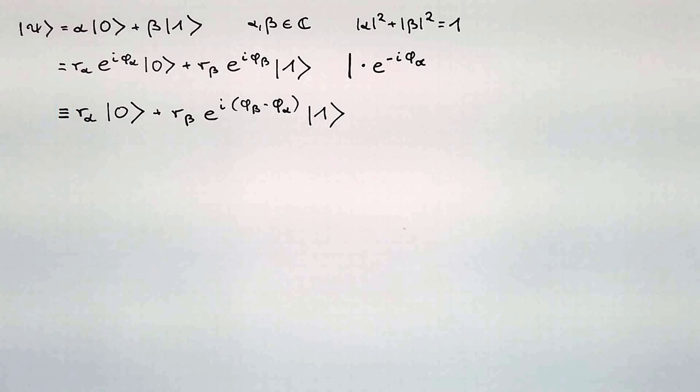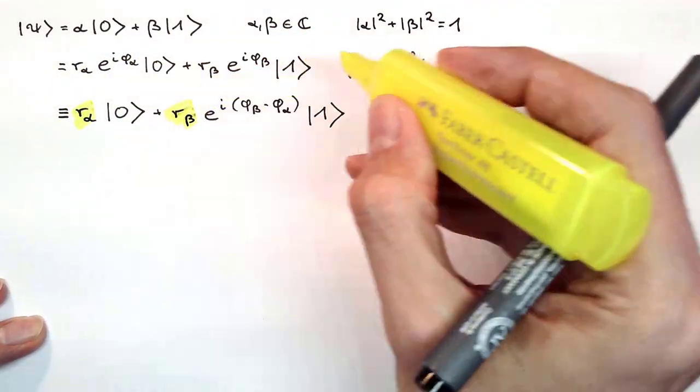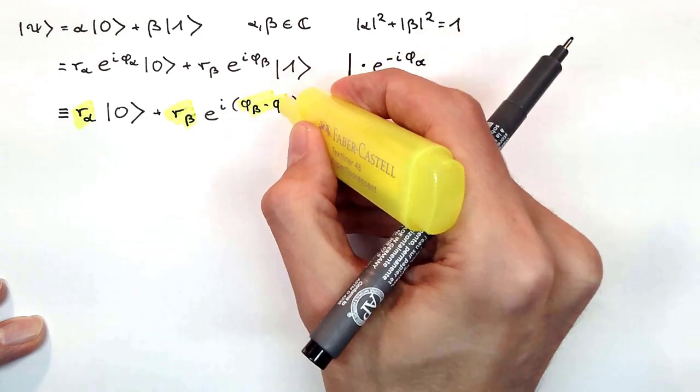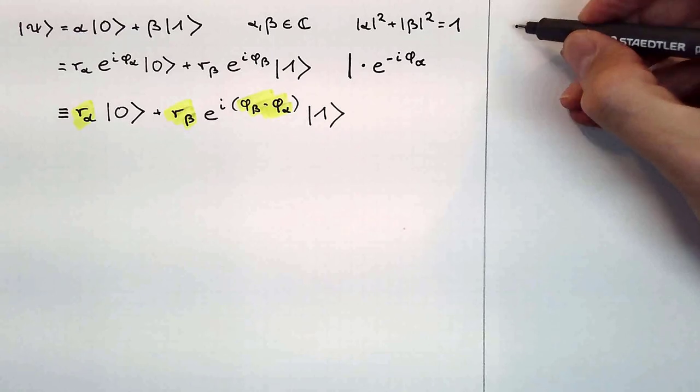So, now we have achieved that we can write down the state of a qubit with only three real numbers: r_alpha, r_beta and the difference phi_beta minus phi_alpha. But we want to go further. Our goal is now to describe the qubit with only two real numbers.